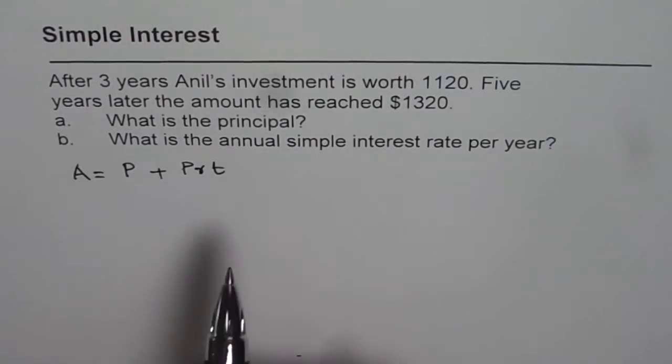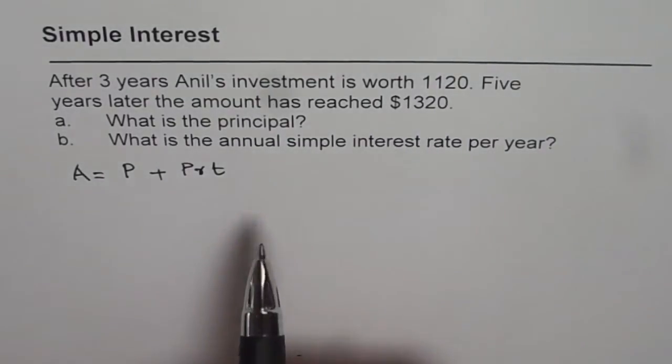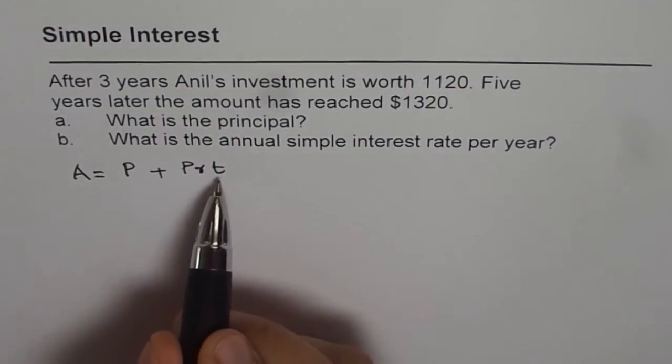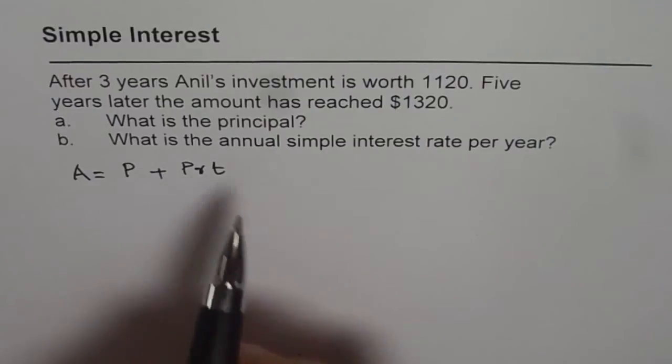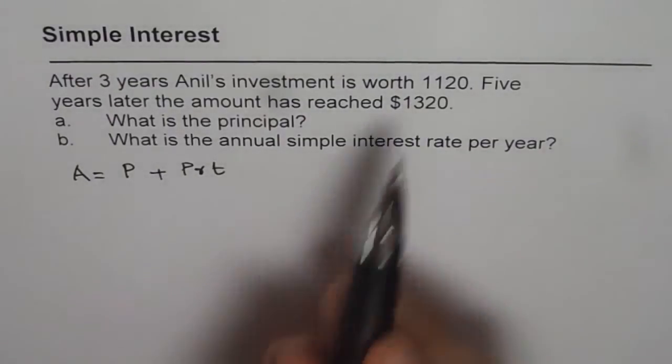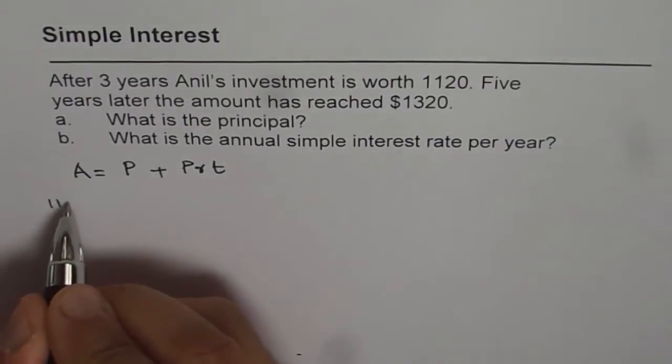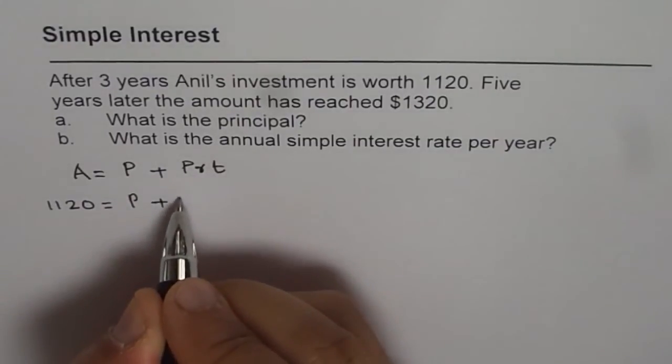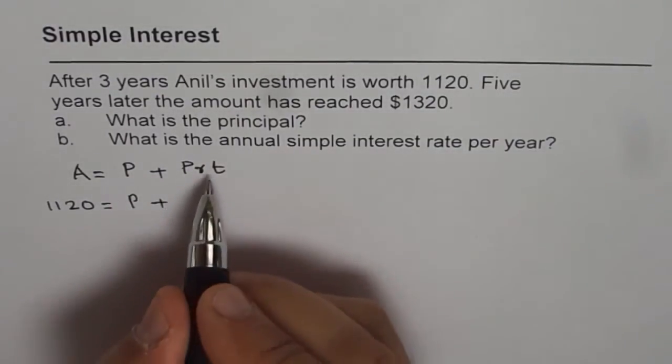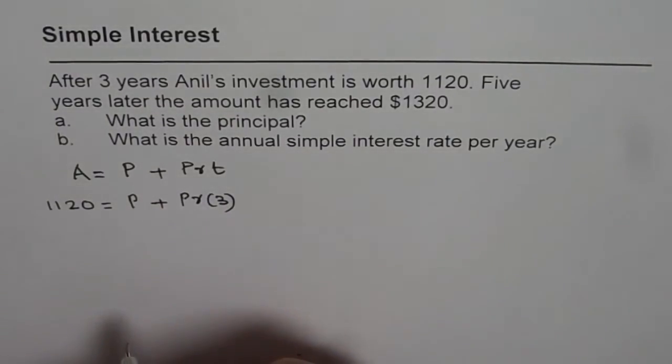Now what we are given here is after three years Anil's investment is worth $1120. So after three years time will be three. We don't know what principal and what rate is. So we'll just use the variables P and R but we know the amount which is $1120. So let's write down the first equation which is 1120 = P + PR(3). So this is after three years.